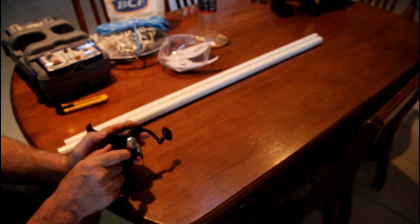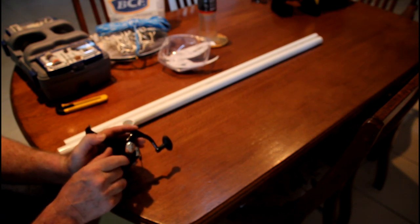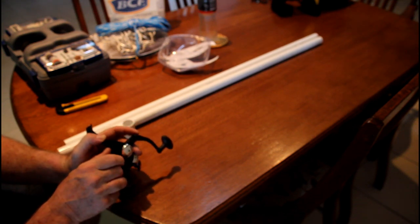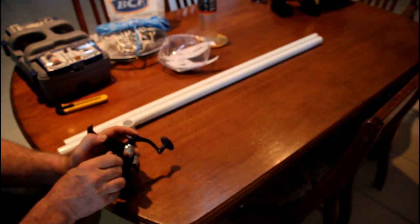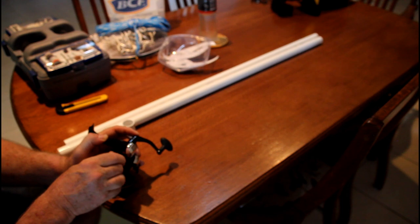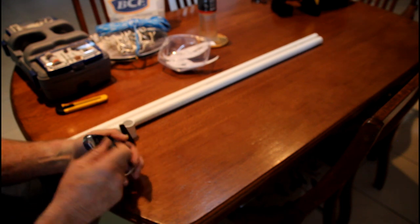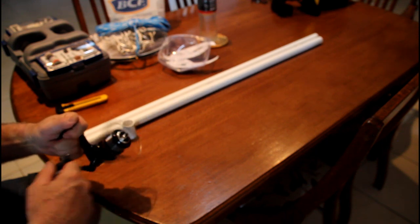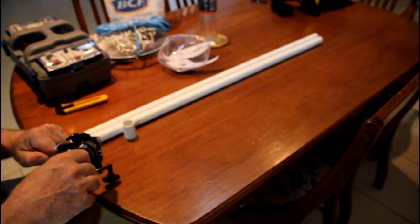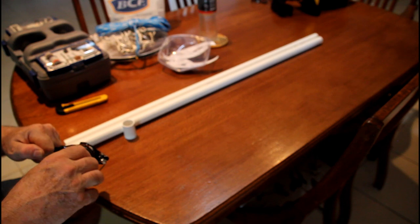As usual with these sort of reels, the handle either folds up or comes off altogether so that they can pack it into a smaller box. In this case, it folds and you tighten the knob on the other side to lock it into position. It actually feels a lot better than I expected to use. It's even got a drag and the drag doesn't feel too bad for the price either.